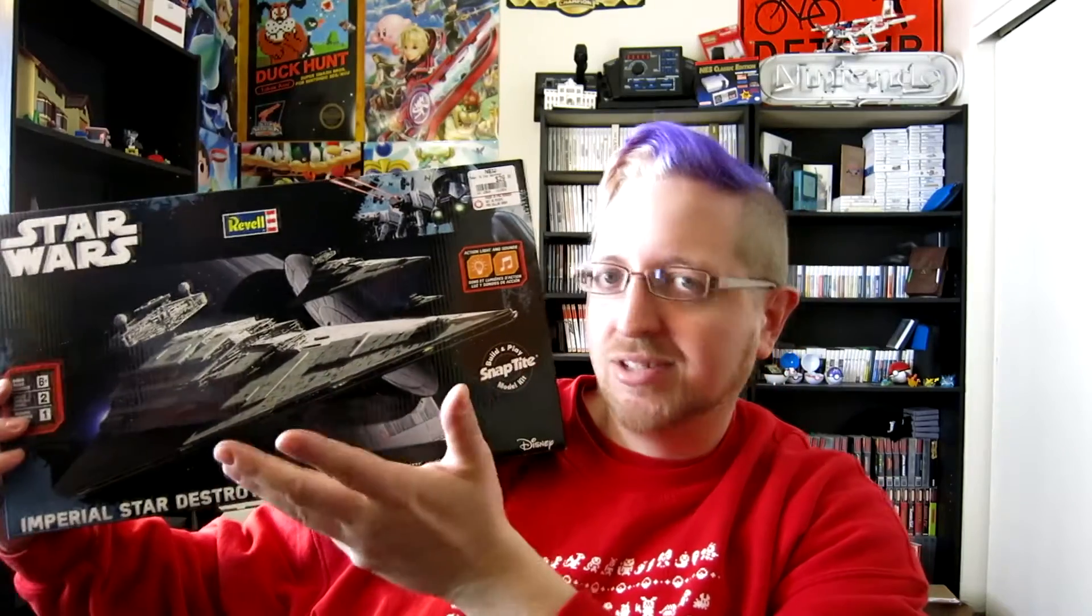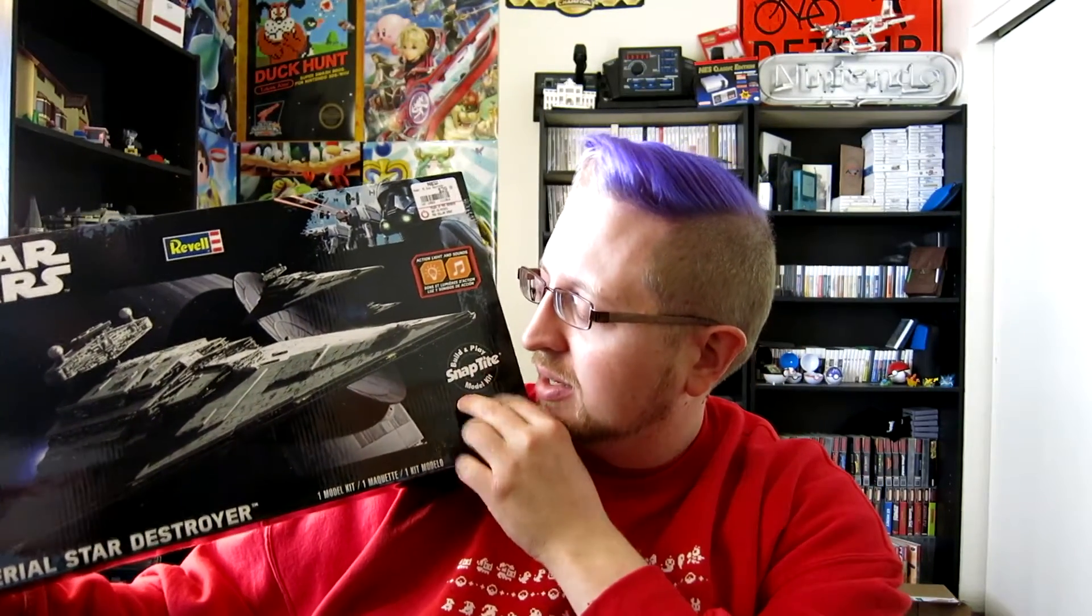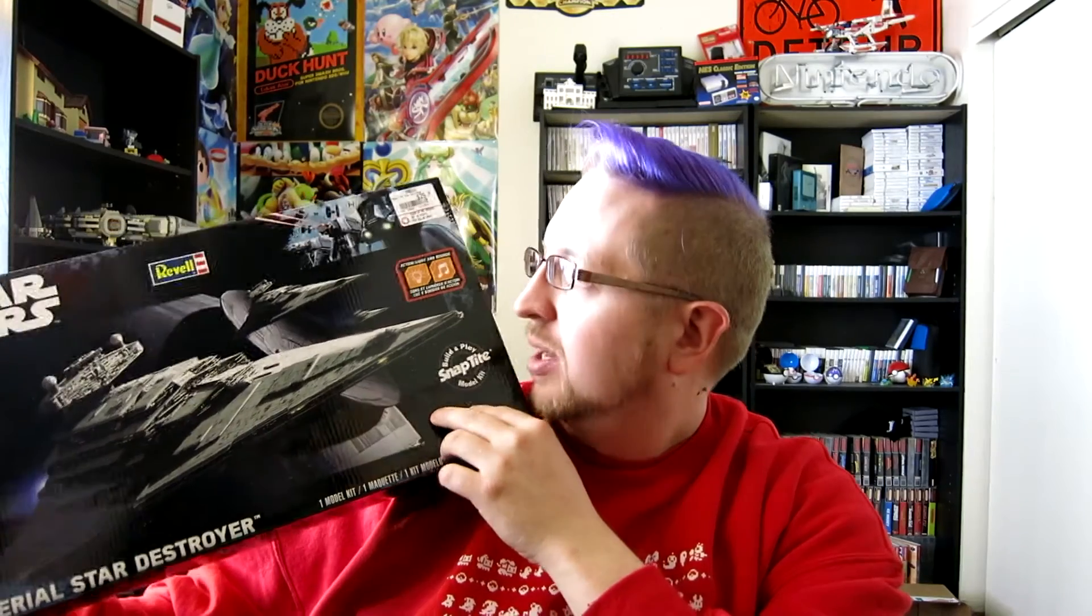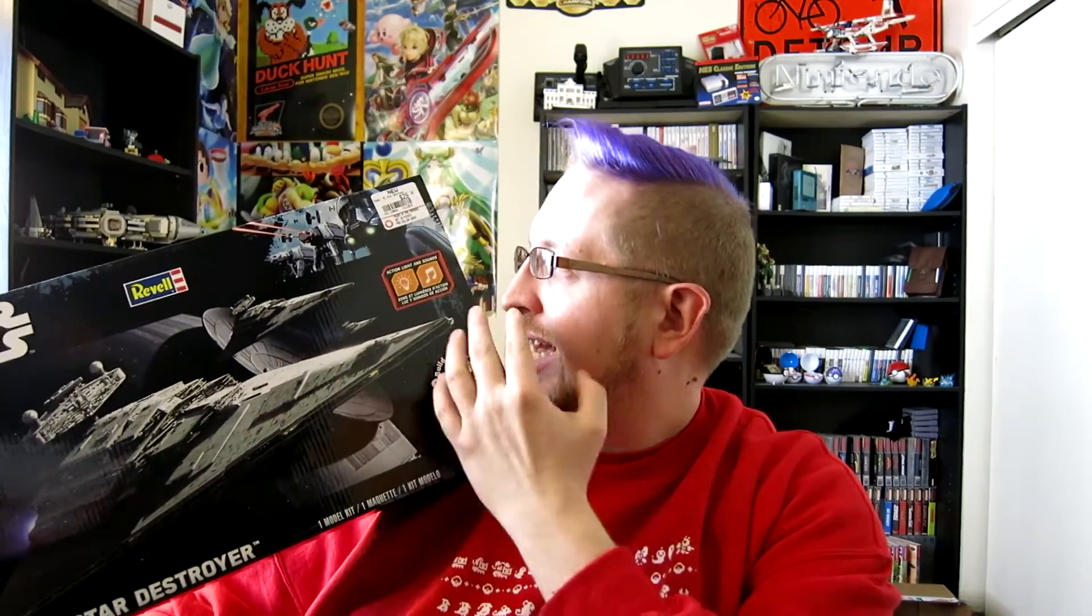If you can't see already, it's a Star Destroyer from Star Wars, more specifically themed with the Rogue One movie. This is made by Revell and it's got light and sound, so we're going to open this up, build it, and then I'm going to have an actual Star Destroyer toy to play with.